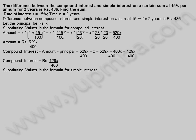Substituting values in the formula for simple interest. Simple interest is equal to X into 2 into 15 divided by 100. Simple interest is equal to 30X divided by 100 rupees.